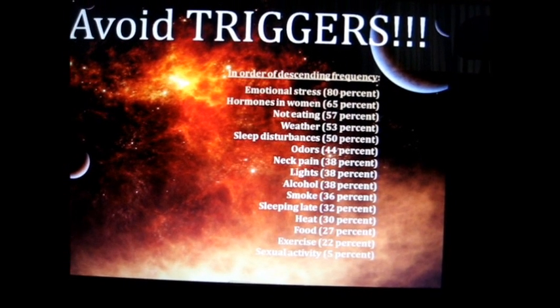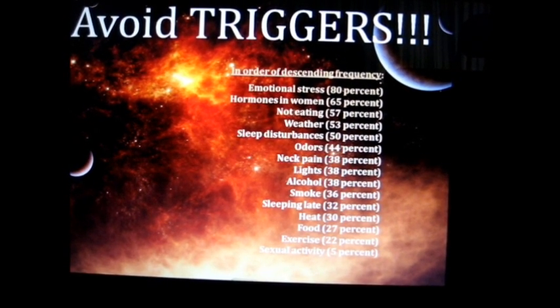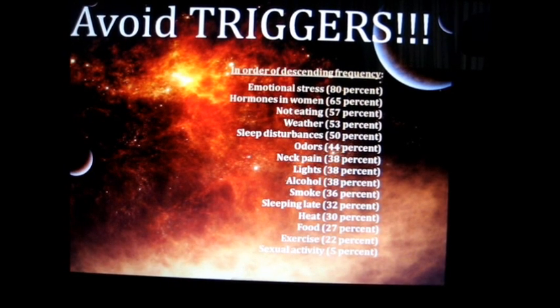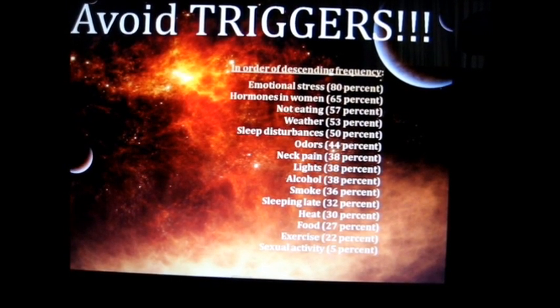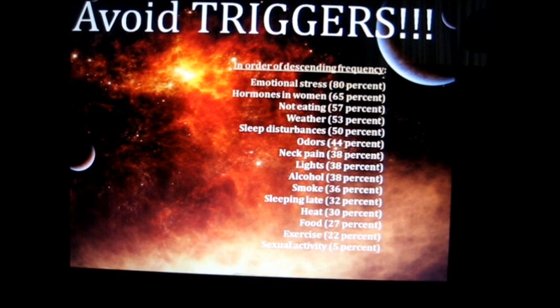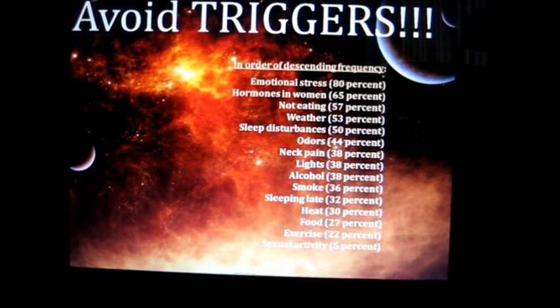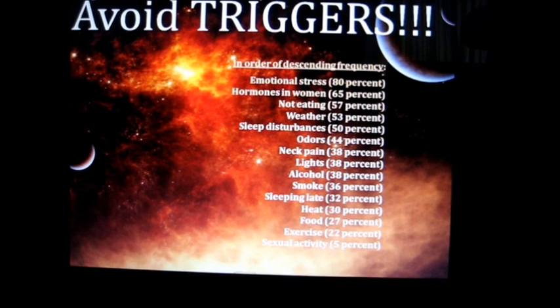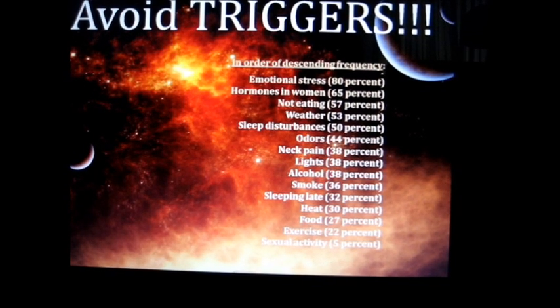In a retrospective study of almost 2,000 migraine sufferers, 75% reported having at least one trigger involved in their acute migraine attacks. In order of descending frequency, these include emotional stress, hormones in women, not eating, weather, sleep disturbances, odors, neck pain, lights, alcohol, smoke, sleeping late, heat, food, exercise, and sexual activity. That's incredible that emotional stress is the number one trigger in 80% of migraine sufferers — it really makes you appreciate the benefits of stress reduction.